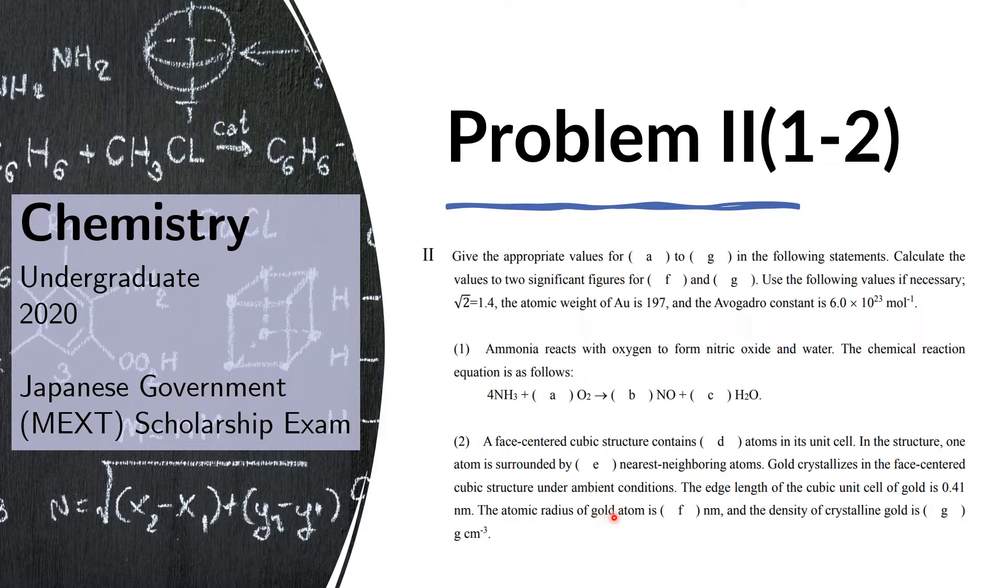The atomic radius of gold atom is F nanometers, and the density of crystalline gold is G grams per cubic centimeter.